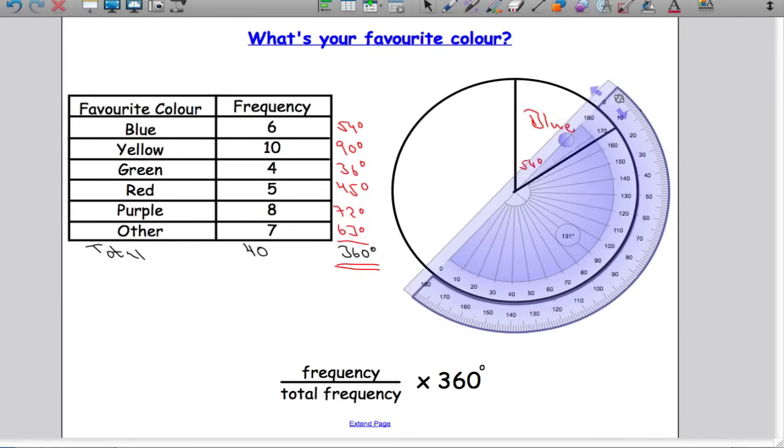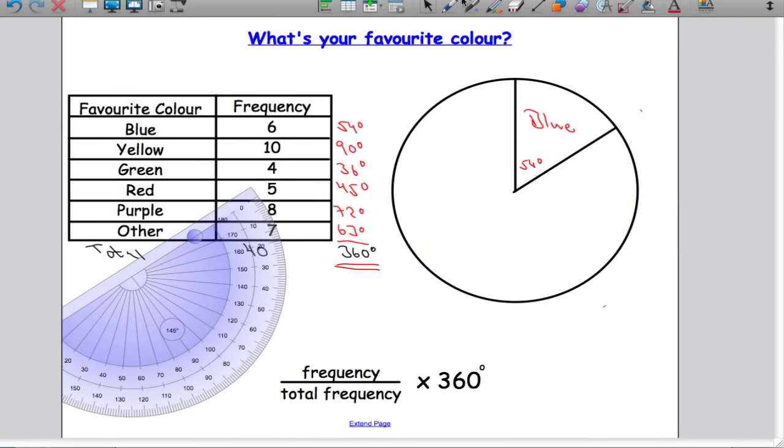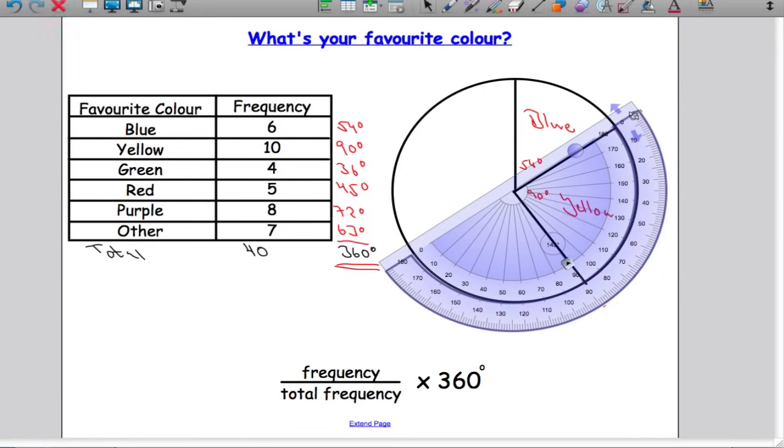Next we need an angle of 90 degrees. Take your protractor. Remember to continue from where you last were, so the last line is here, so I've got to measure from here going all the way around to 90 degrees, which you can see is right here. That's 90 degrees there. Take out your ruler and a straight line at 90 degrees. That is for yellow.